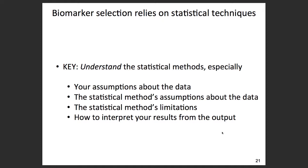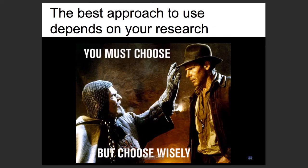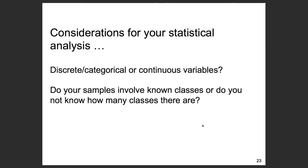You have to understand your assumptions about your data, statistical methods, and limitations — and how to interpret your results. You must choose wisely. One of the biggest issues: are you looking at discrete or categorical results, or continuous variables? Categorical means predicting classes like diseased versus not diseased. Continuous variables are like predicting LDL or HDL levels in blood — you want correlations between levels rather than just saying 'this is class A or class B.'